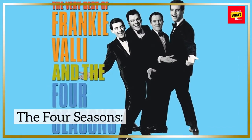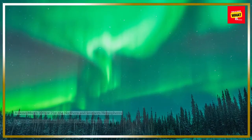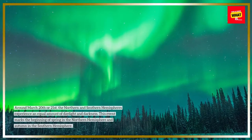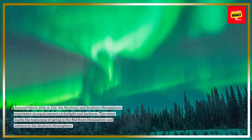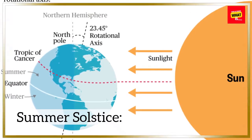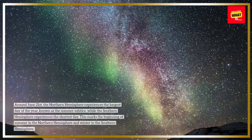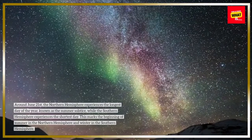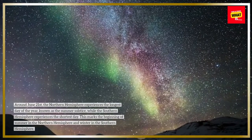The Four Seasons — Spring Equinox and Summer Solstice. Around March 20 or 21, the Northern and Southern Hemispheres experience an equal amount of daylight and darkness. This event marks the beginning of spring in the Northern Hemisphere and autumn in the Southern Hemisphere. Around June 21, the Northern Hemisphere experiences the longest day of the year, known as the Summer Solstice, while the Southern Hemisphere experiences the shortest day, marking the beginning of summer and winter respectively.